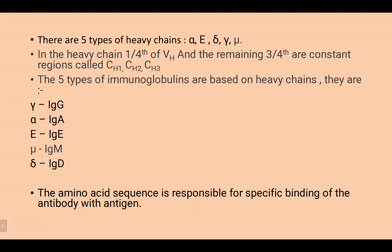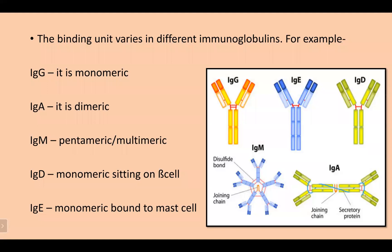The five types of immunoglobulins are based on heavy chain type: gamma gives IgG, alpha gives IgA, epsilon gives IgE, mu gives IgM, and delta gives IgD. The amino acid sequence is responsible for specific binding of the antibody with antigen. The binding unit varies in different immunoglobulins. IgG is monomeric, IgA is dimeric, IgM is pentameric and multimeric, IgD is monomeric sitting on B cells, and IgE is monomeric bound to mast cells.